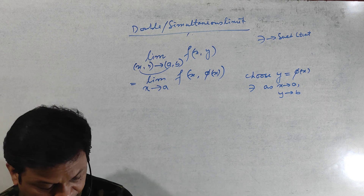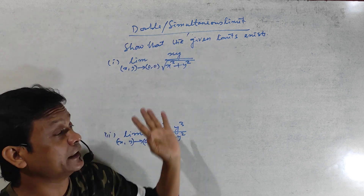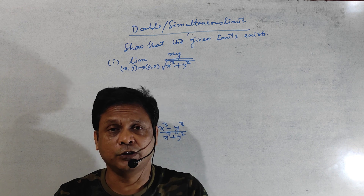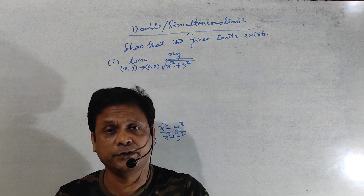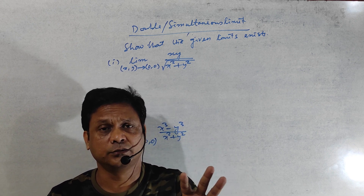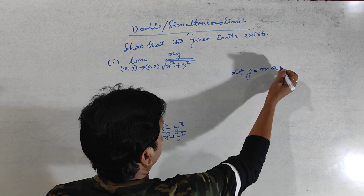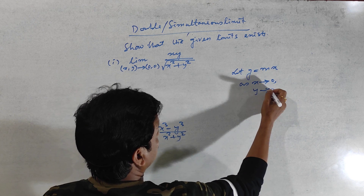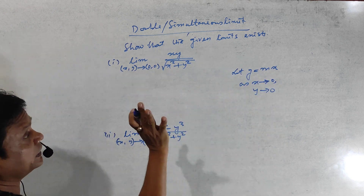I am giving you an example. The given limit — you have to prove this limit exists, meaning the limit will be a unique, finite value. One and only one value, not infinity or minus infinity, but something like 2, 3, 0.5, root 3, or zero. In this case, let y equal to mx. As x tends to zero, y tends to zero — if we put x equal to zero, m into zero is zero, so y equals zero. Our condition is satisfied.